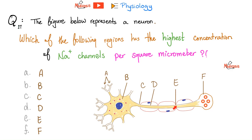Because this is the node of Ranvier and myelin is an insulator. So the nerve impulse must wait until it reaches the node of Ranvier — that's why the nerve impulse is jumping, so to speak. Therefore, in a myelinated fiber, nodes of Ranvier are the most excitable parts.